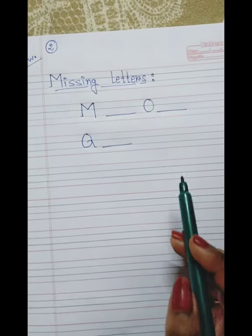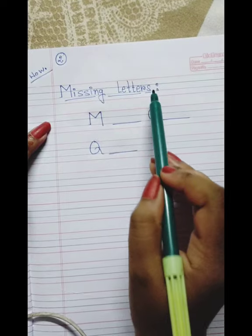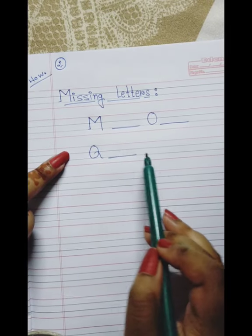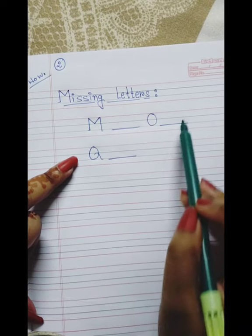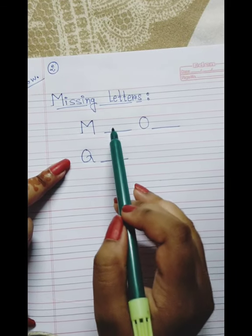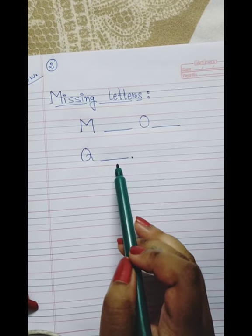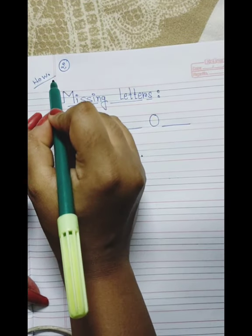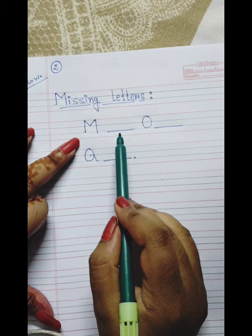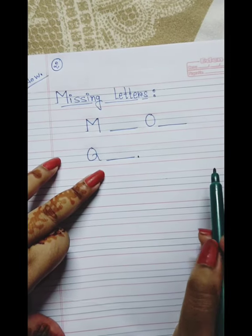As usual, I will give you homework. This is for the parents — I am asking parents to write these letters: M, O, and Q, and leave a dash for the missing ones. Write it on your child's copy and ask your kids to fill in the missing letters. You will see whether they can write by themselves in proper form and are familiar with the alphabets one after another. So one page of homework for you children — only one page. Write it as missing letters: M, dash, O, dash, Q, dash — till R.